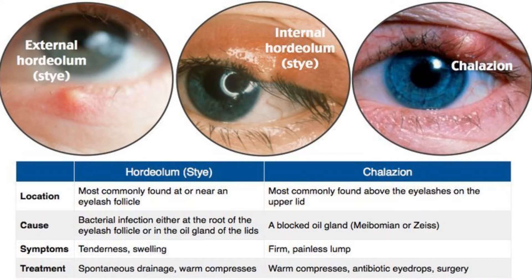When you first get a stye, your eyelid is probably red and tender to the touch, and your eye may also feel sore and scratchy. Now, chalazion is a swollen bump on the eyelid. It happens when the eyelid's oil gland clogs up. It may start as an internal hordeolum. At first you might not know you have a chalazion, as there is little or no pain, but as it grows your eyelid may get red, swollen, and sometimes tender to touch. If the chalazion gets large, it can press on your eye and cause blurry vision.